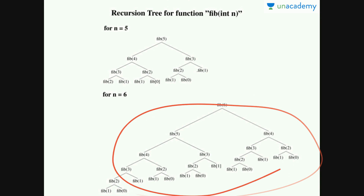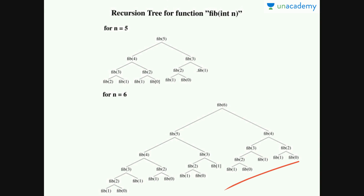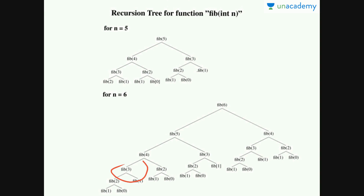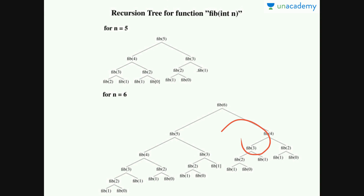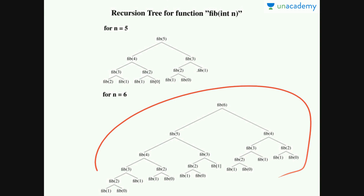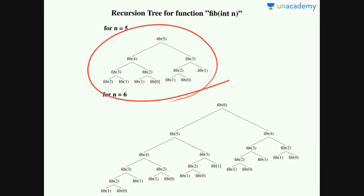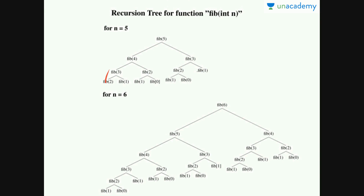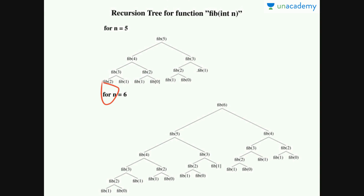We call these overlapping sub-problems. These overlapping sub-problems are being called multiple times. Fib(4) is called two times. Similarly Fib(3) is also called multiple times — first time here, then here, then again here. The same thing happens with Fib(2) as well — it is called three times. So in the case of overlapping sub-problems, we are doing many unnecessary computations of the same function multiple times.